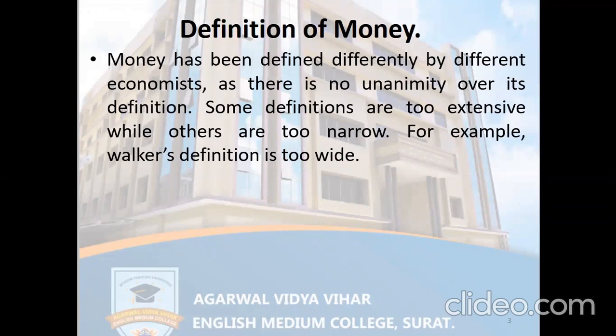There is no uniform definition of money. Some economists are too extensive while others are too narrow. That means some economists, while defining money, use a wider spectrum or broad view, whereas some definitions are narrow, considering only limited things as money.